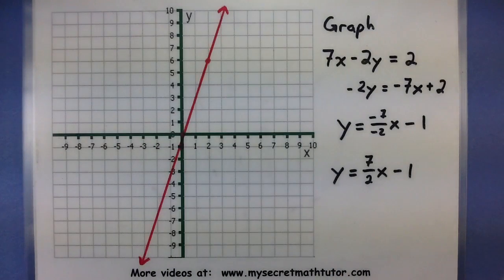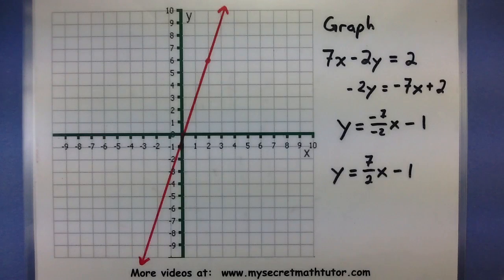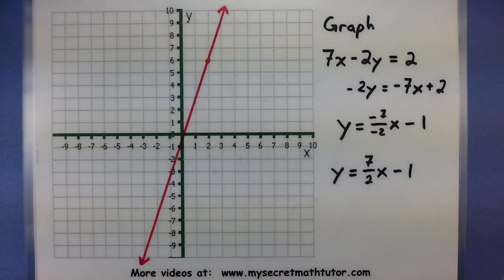Remember that slope-intercept form is perfect for graphing lines because it gives you a y-intercept — a good starting point — and a slope, which gives you directions on how to get to another point.